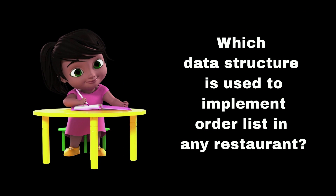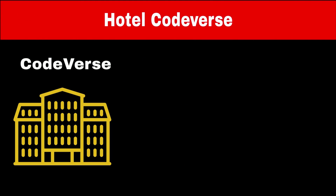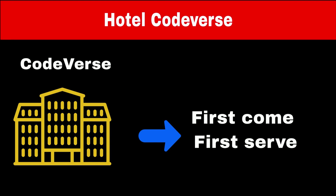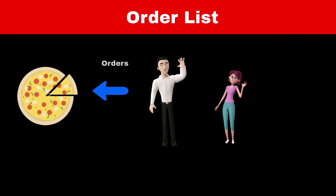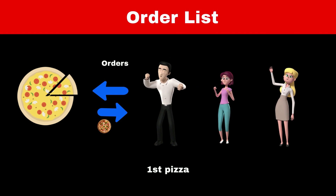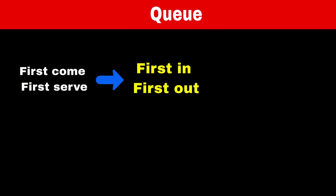Do you know which data structure is used to implement an order list in any restaurant? Consider a hotel named Codeverse that accepts orders online. Generally, for the same food item, whoever places the order first will get delivery first — first come, first served. Suppose Ross places an order for pizza, and after Ross, Monica and Rachel place orders. The first pizza is delivered to Ross, the second to Monica, and the last to Rachel. This operation where the first person to order gets food first is called First In, First Out. The data structure that allows this operation is called a queue.